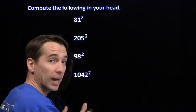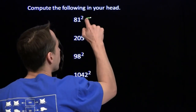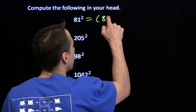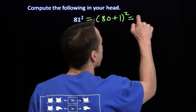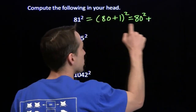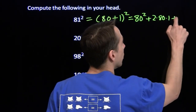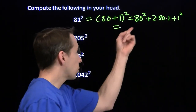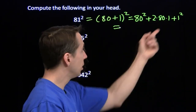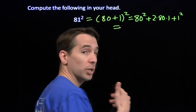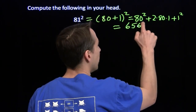Now let's go back through those problems a little more slowly. 81 is 80 plus 1 squared. When we square that out we have 80 squared plus 2 times 80 times 1 plus 1 squared. 80 squared is 6,400. 2 times 80 times 1 is 160. And that 1 squared is just 1. 6,400 plus 160 is 6,560, add on the 1, we've got 6,561.